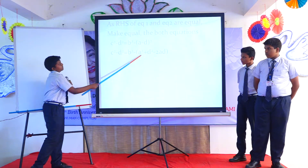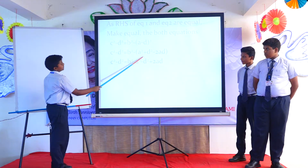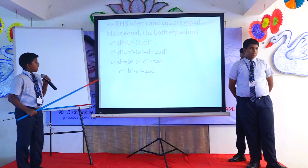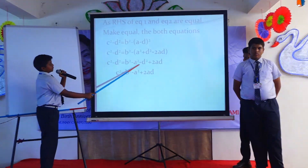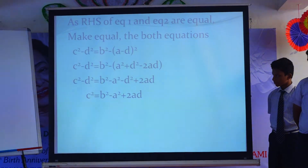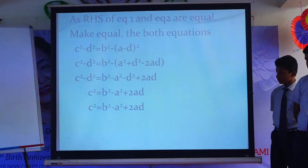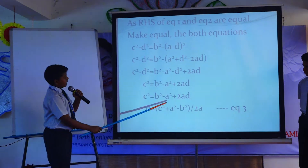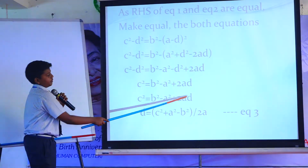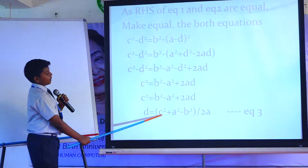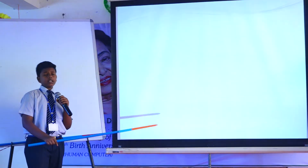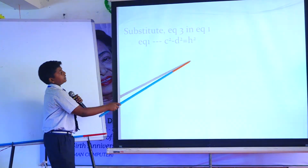Expand this. You get c squared minus D squared equals b squared minus (A squared minus 2AD plus D squared). Cancel D squared on both sides. You get c squared equals b squared minus A squared plus 2AD. Send b squared and A squared to the left side, so only 2AD remains. You get the value of D: D equals (c squared minus b squared plus A squared) divided by 2A — that is equation 2. Substitute equation 2 into equation 1: c squared minus D squared equals H squared.